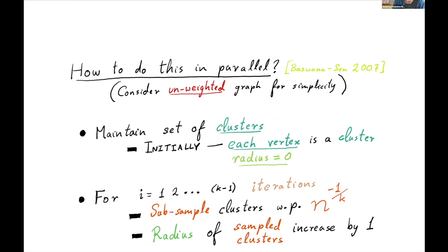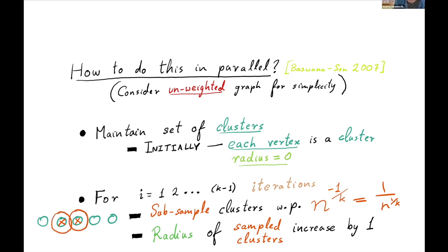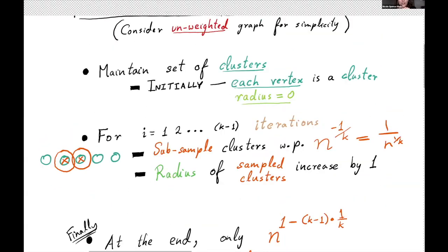We proceed for k minus 1 iterations. In each iteration, some of the existing clusters are subsampled — let's say we start with these green clusters. Not all of them will proceed to the next round; only a few are subsampled with probability n to the minus 1 over k, and these are promoted to the next round. Additionally, each sampled cluster increases its radius by one unit per iteration. The unsampled clusters are forgotten, while sampled ones grow to engulf more and more vertices.